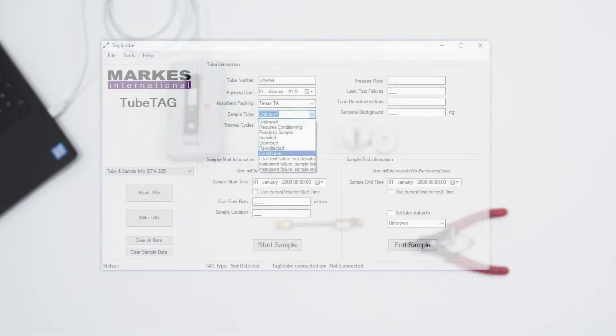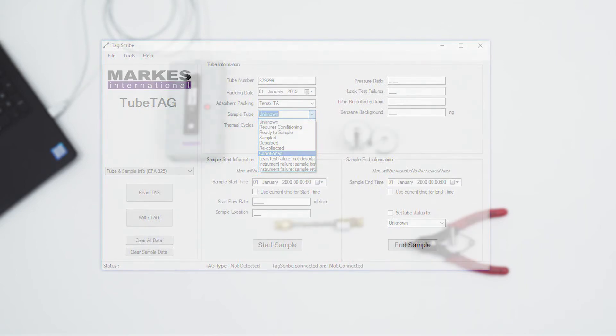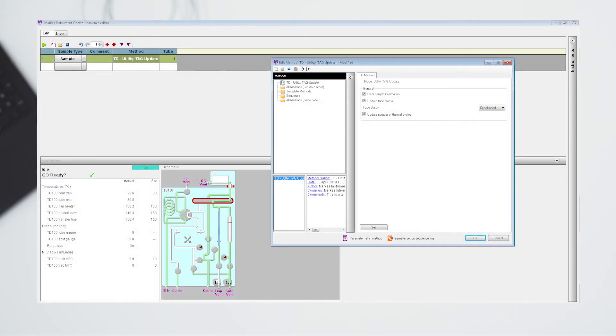If you would like to keep track of sorbent tube status at this point, you can update the sample tube on the tag to conditioned. To save time, you can do this as a batch update on the MIC software.